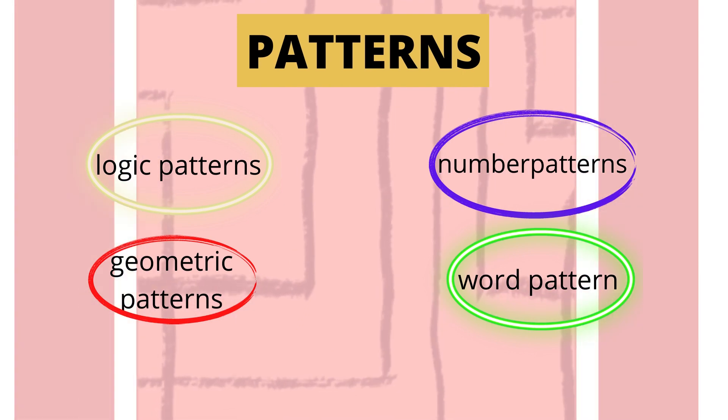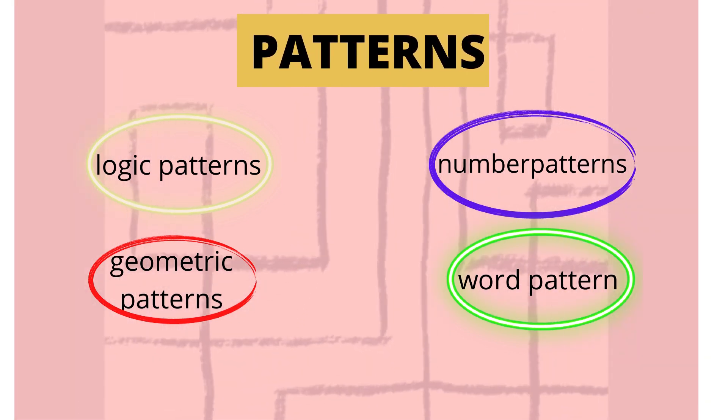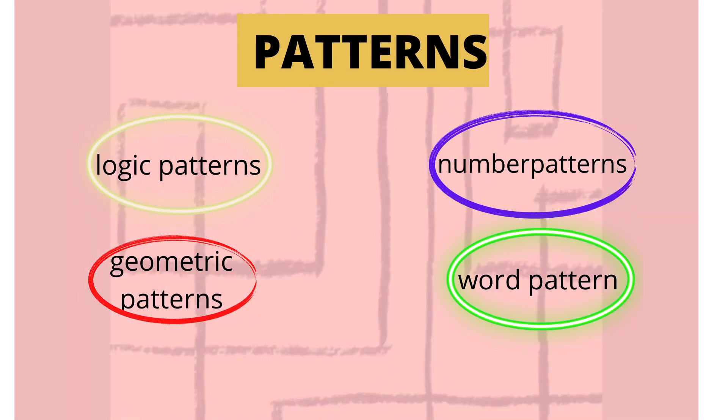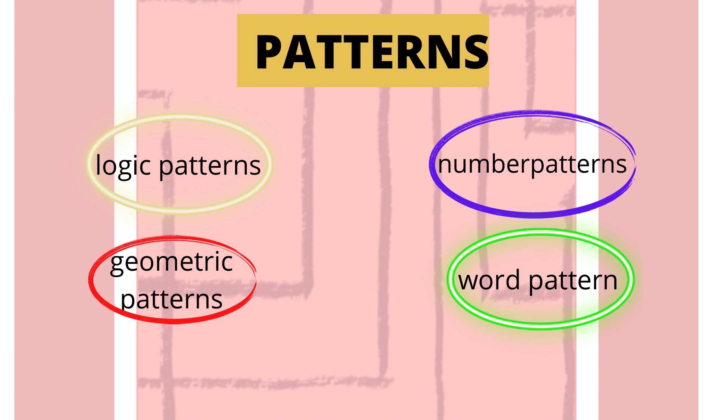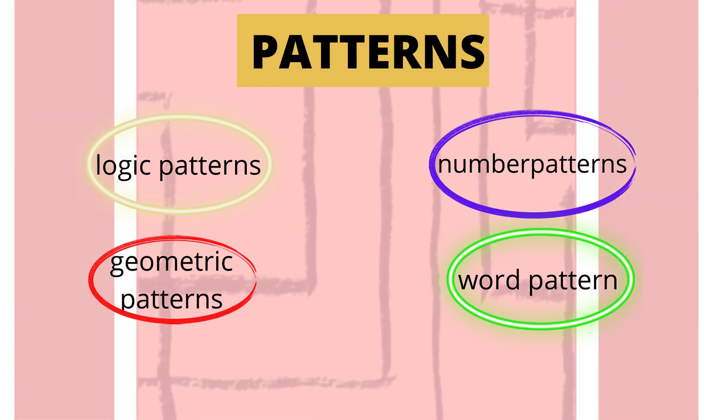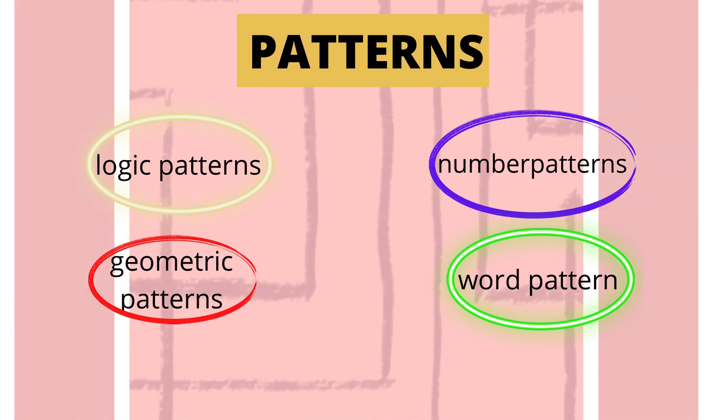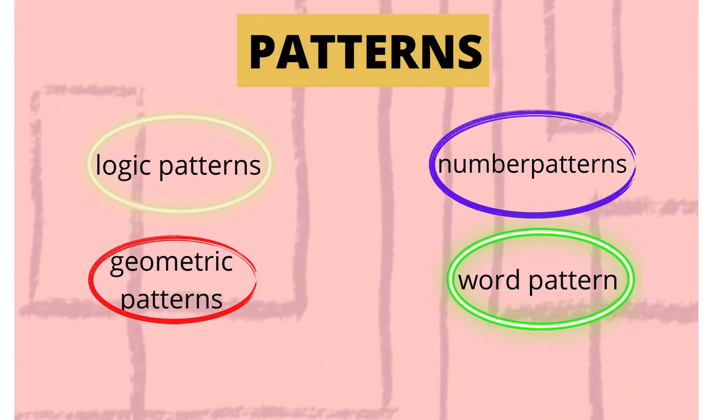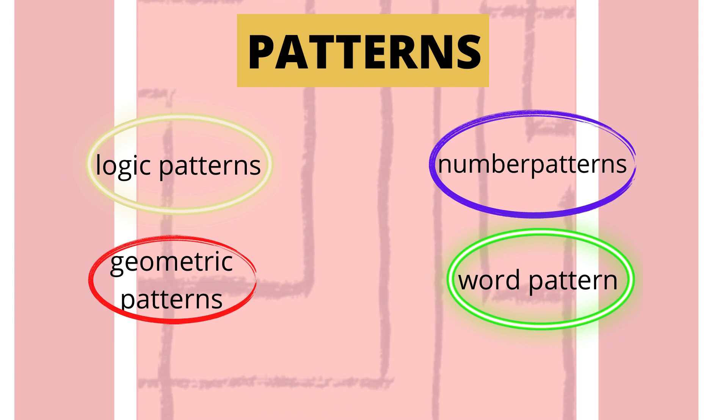So, what is pattern? A pattern is an arrangement which helps observers anticipate what they might see or what happens next. A pattern also shows what may have come before. A pattern organizes information so that it becomes more useful. The human mind is programmed to make sense of data or to bring order where there is disorder. It seeks to discover relationships and connections between seemingly unrelated bits of information. In doing so, it sees patterns.